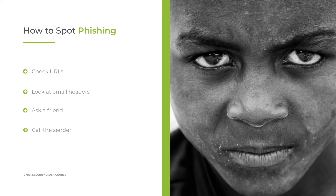If you're still not sure whether something is legitimate, you can always ask a friend — ask someone else to read it and see what they think. One of the best ways is to call the sender. If there's a phone number in the email, don't use that number. Go back to a number you know. If it's someone in your company, go to the company directory and find their extension. If it's an organization like PayPal, don't click the link — go to PayPal.com directly in your browser, log in, and find their phone number to call if needed.